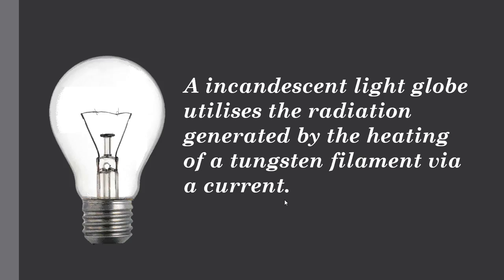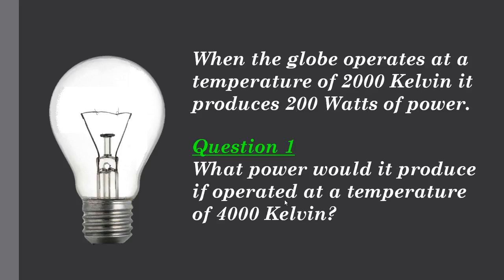Now we can look at four different examples using this particular ratio approach, or proportionality. First of all, let's consider an incandescent light globe, which we've all seen in houses around Australia. It consists mainly of a tungsten filament that's heated up via current and it emits radiation. There are gases present. Let's consider a globe that when it's at 2000 Kelvin produces 200 watts of power. Now my first question is, what power would this globe produce if the temperature were increased to 4000 Kelvin?